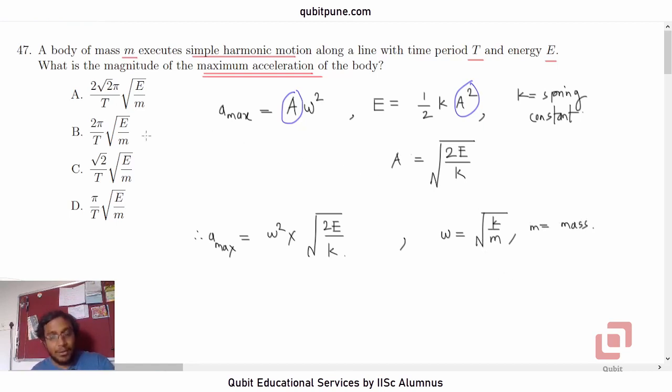And in the options, we also do not have K. So, what should I do now? I should find the replacement for root K. So, what will be root K? Root K will be root M into omega.